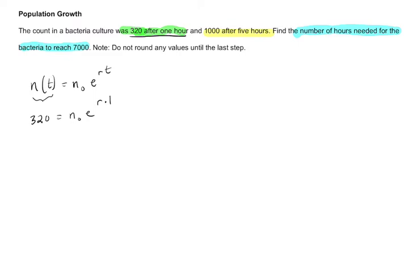How can I find that? Because I also know, right, n₀ is my starting population, R is the rate, and then t here is the time. I also know that it's 1,000 after five hours, so R times five.